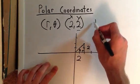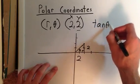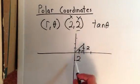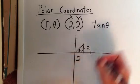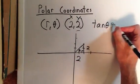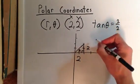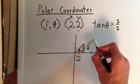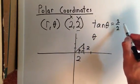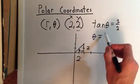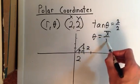So tan θ, which is opposite over adjacent, is equal to 2 over 2. So if we take the inverse tan of 1, which 2 over 2 equals 1, θ will equal π/4, being in the first quadrant.